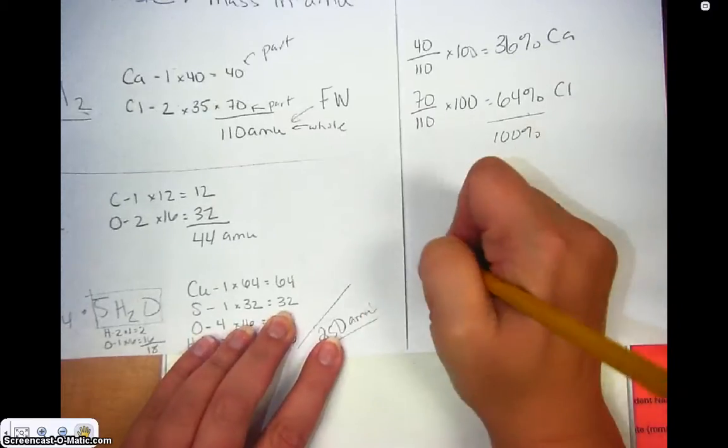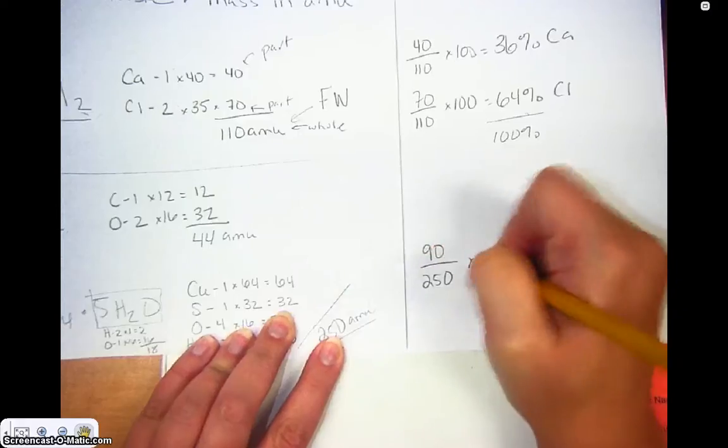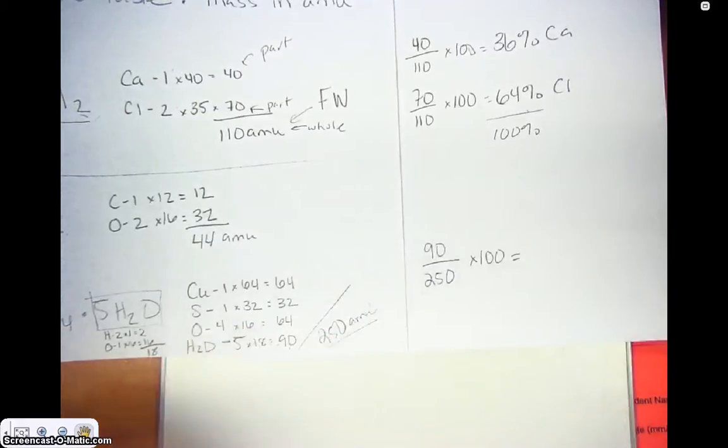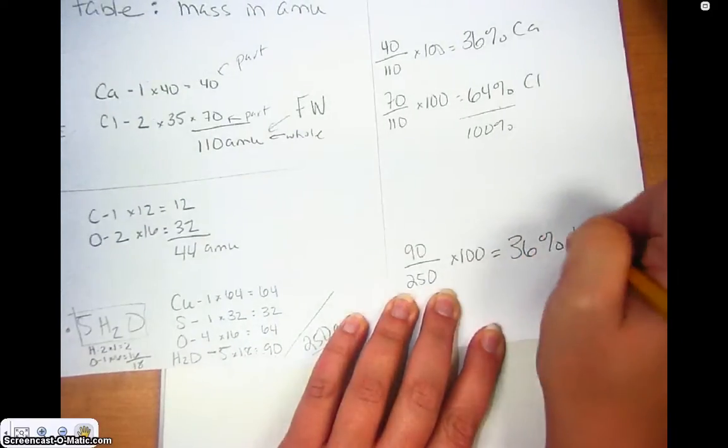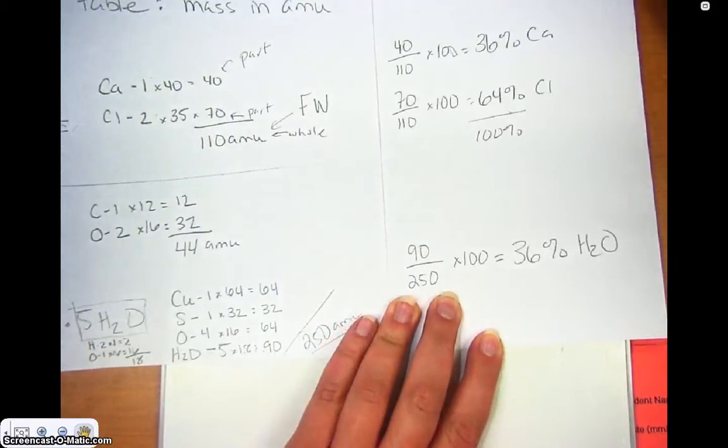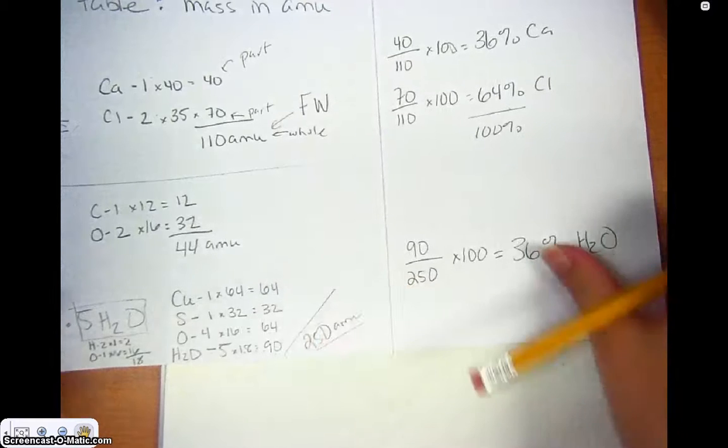So, I know that 90 atomic mass units out of 250 will give me the percentage that is water in this hydrate compound. So, I'm just going to take 90 divided by 250 times 100, and I get 36 percent is water.